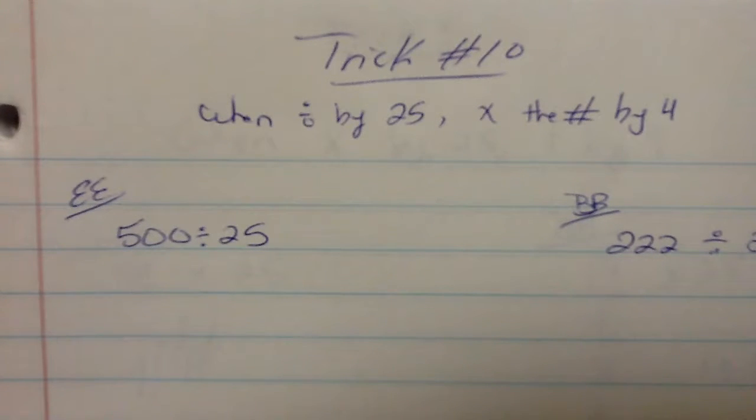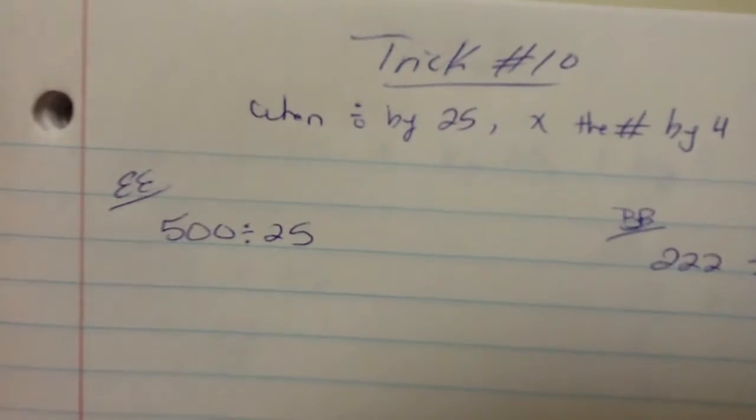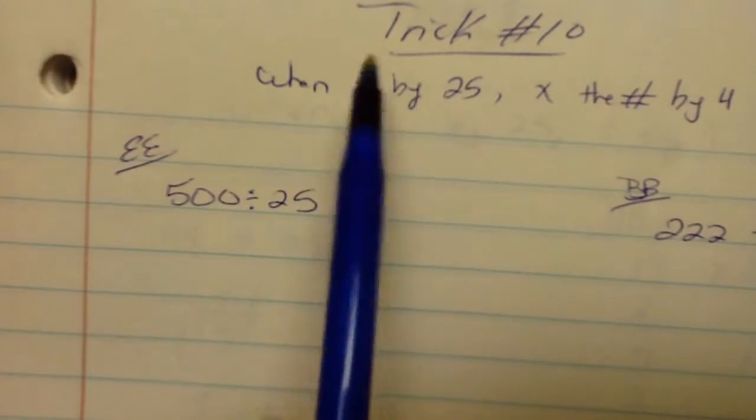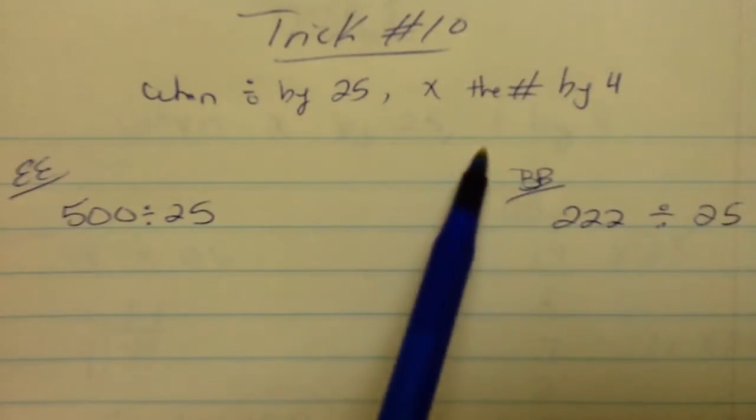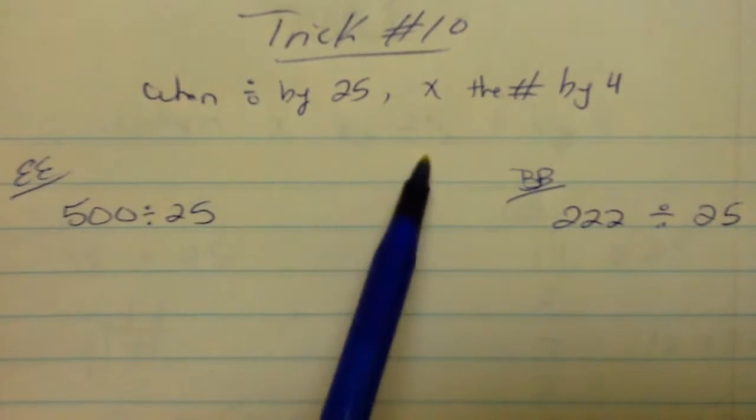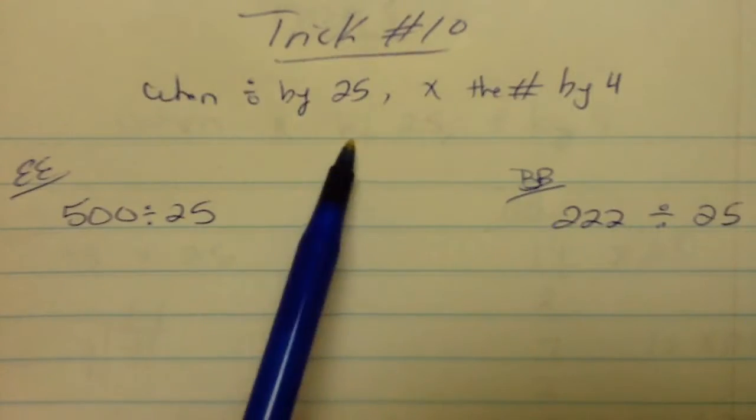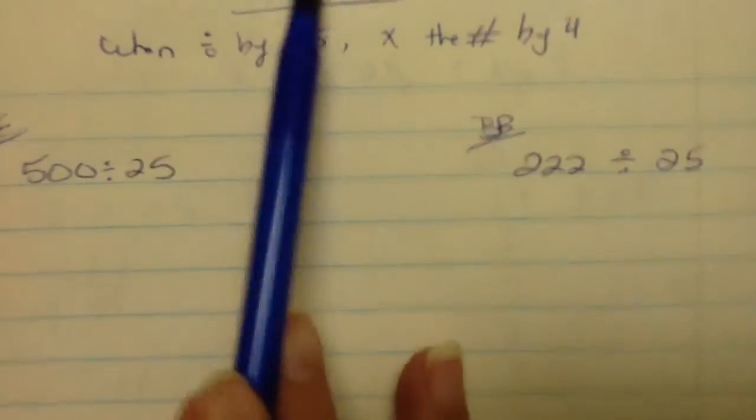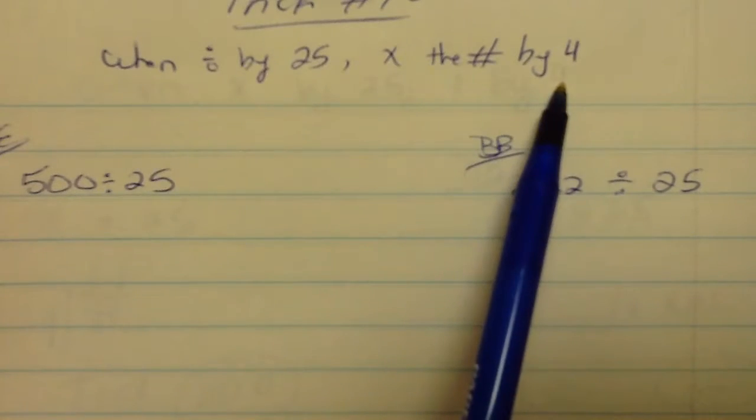When dividing by 25, we can multiply that number by 4. We can't really just multiply the number by 4 and get the answer, but we can multiply the number by 4 and then check for reasonableness and find a number that makes sense. Why would we do that? Well, first off, remember the relationship between 25 and 4.